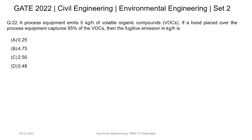This is question number 22 from GATE 2022 Set 2. The question says a process equipment emits 5 kilograms per hour of volatile organic compounds. If a hood placed over the process equipment captures 95 percent of the volatile organic compound, then the fugitive emission in kg per hour is what? The process equipment emits 5 kg per hour and the hood captures 95 percent.